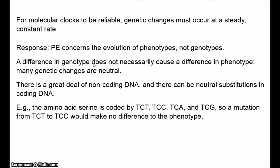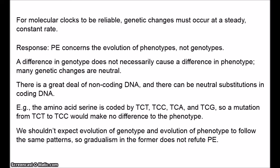Neutral mutations tend to occur at a fairly constant rate, as should be expected. Most mutations that become fixed in a species are neutral ones — this is the basis of the molecular clock. But these neutral mutations make no difference to the phenotype. We shouldn't necessarily expect the evolution of the genotype and the evolution of the phenotype to proceed according to the same kinds of patterns. Even if change in the genetic code occurs at a constant and gradual rate, this doesn't falsify punctuated equilibrium.